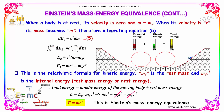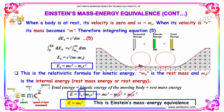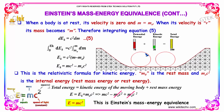Ek = MC² − M₀C² is the relativistic formula for kinetic energy. M₀ is the rest mass and M₀C² is the internal energy, or rest mass energy. The total energy equals the kinetic energy of the moving object plus the rest mass energy: E = Ek + M₀C². Replacing Ek gives E = MC² − M₀C² + M₀C², and canceling terms yields E = MC². This is Einstein's mass-energy equivalence.